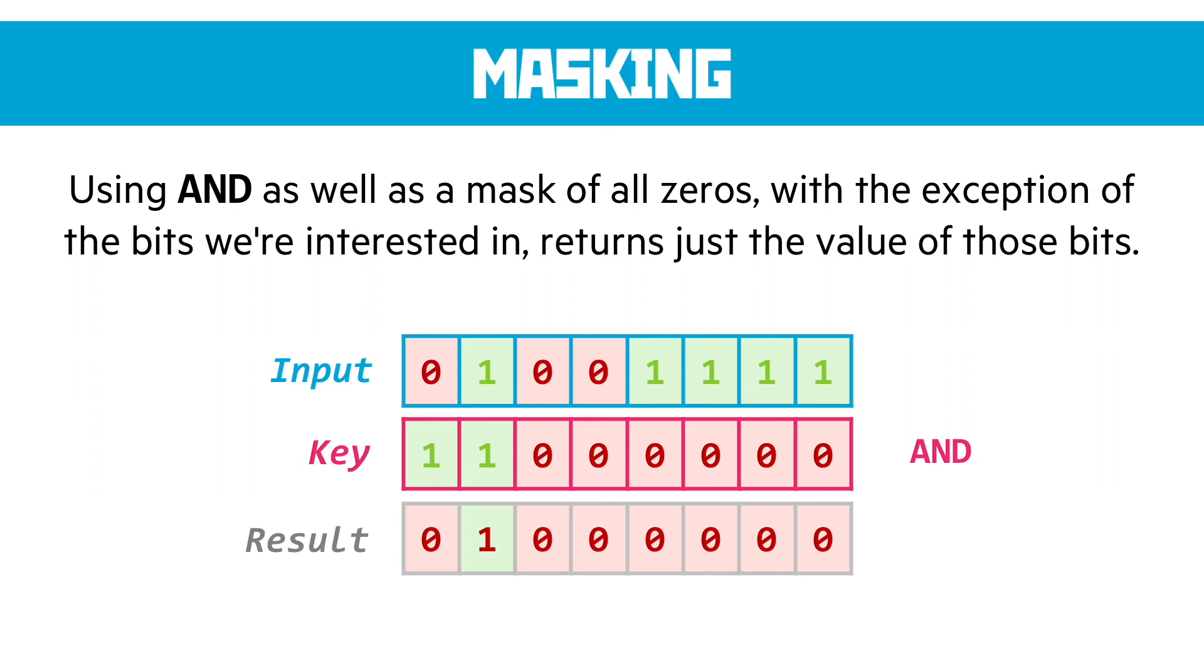When you apply AND to the input and the key, it returns the value of the input only where the key is set to one, and it sets the rest to zero. And this very easily allows us to identify areas of the original byte where we might want to look at a bit more detail at what the original values were.